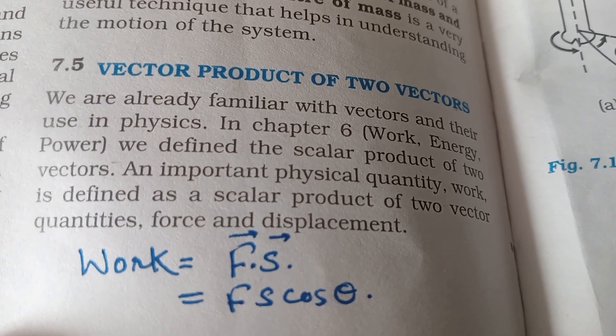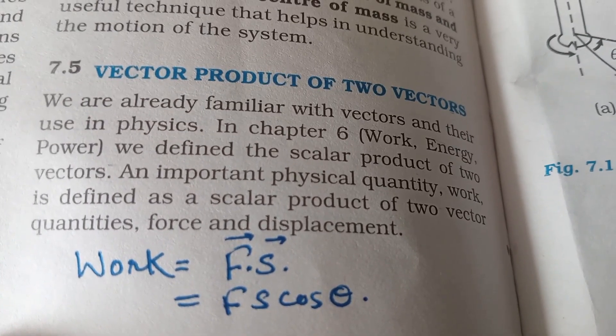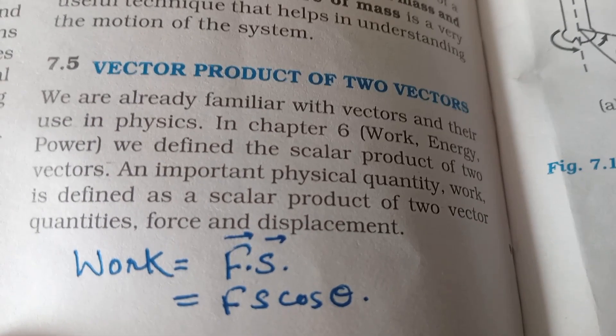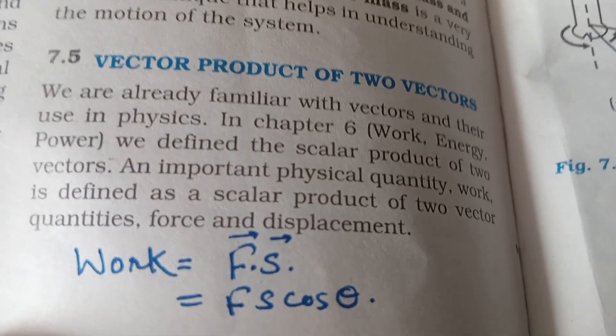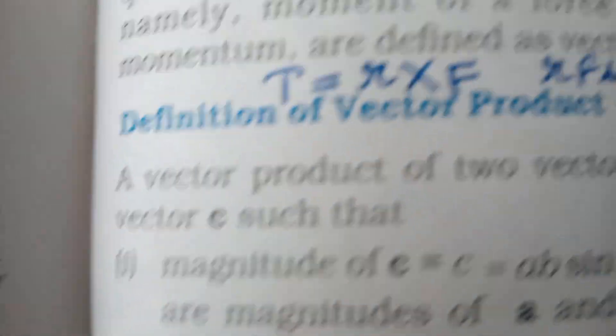Work has a scalar product, which is vector F dot vector S equals work. But in this chapter, we will learn vector product.